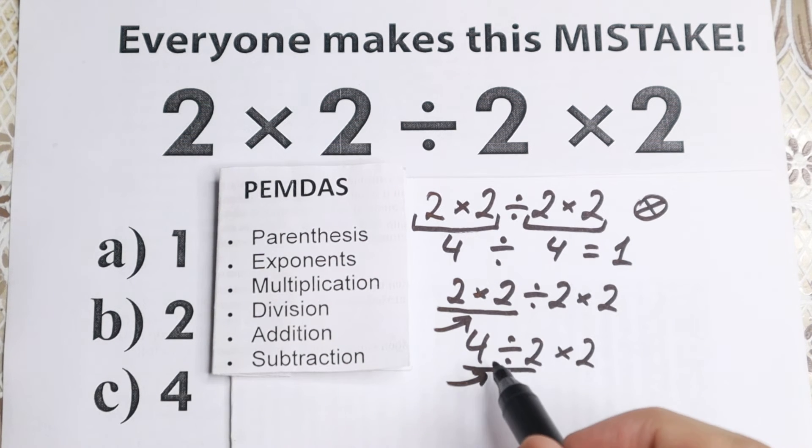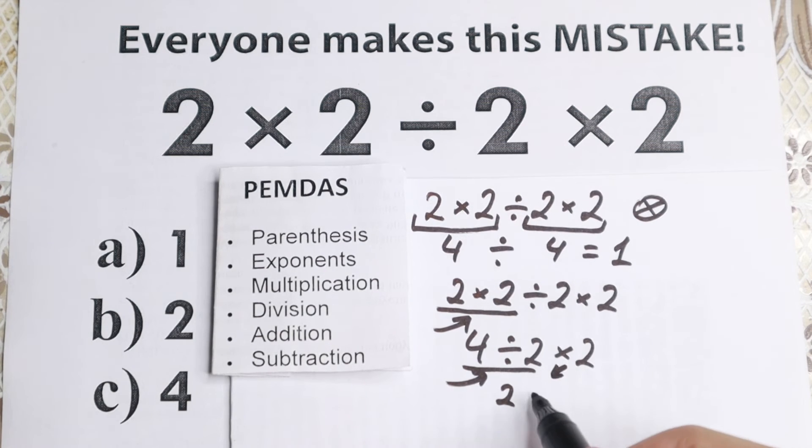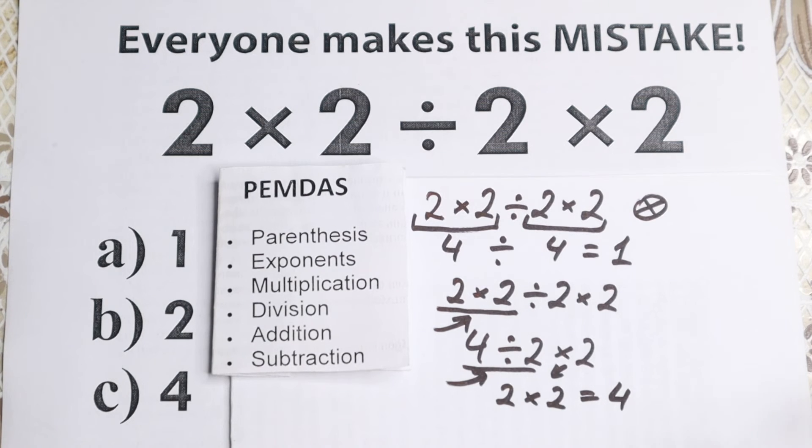Doesn't matter, let's divide. 4 dividing by 2 equal to 2. And we still have this multiplication from here. So 2 times 2 equal to 4. So as you can see, according to PEMDAS order a correct answer is 4.